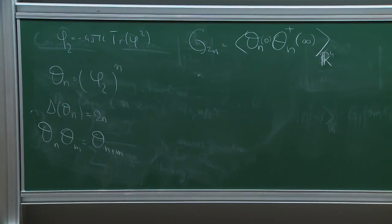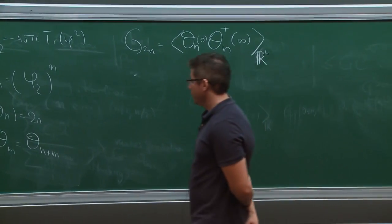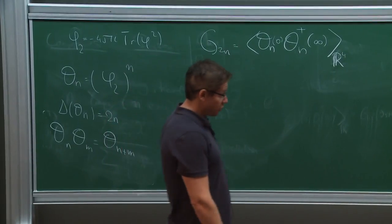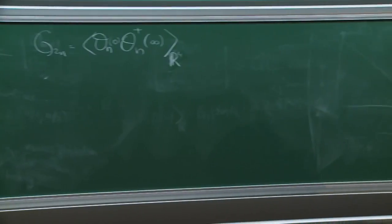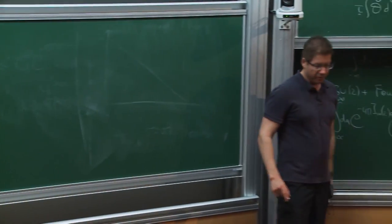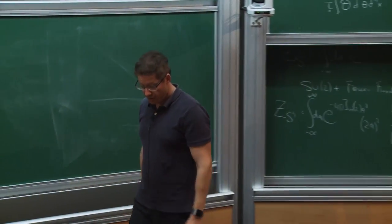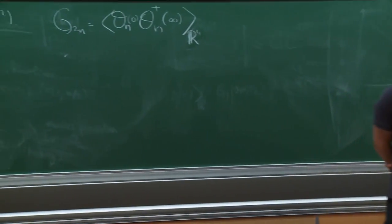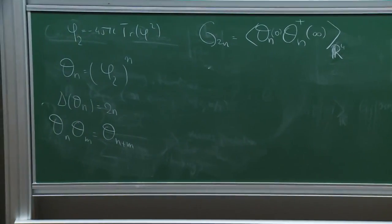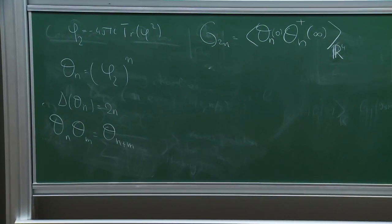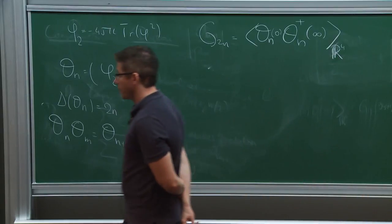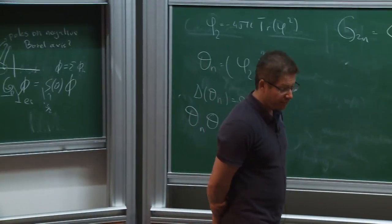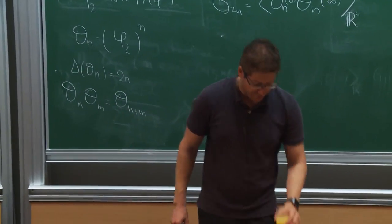I want to continue this set of lectures and finish them by computing all these observables in SU(2) gauge theory with four fundamental hypers, and also in SU(2) gauge theory with an adjoint hyper, and we'll see the connection to integrability and the equations of tt* geometry. That's the topic of the last lecture. I will not present the subject for other gauge groups — I'll just mention a few of the open questions and results in that field.